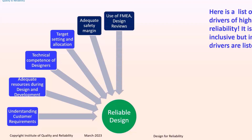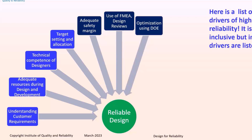Use of tools such as failure mode effects analysis and design reviews play an important role for the teams. Optimization using design of experiments would be beneficial in most cases. Robust design can be useful for making sure that the product is immune to, or less prone to, problems because of external noise factors.